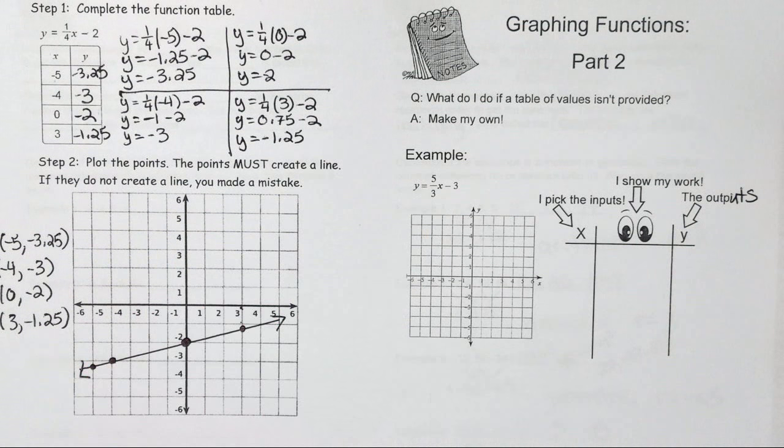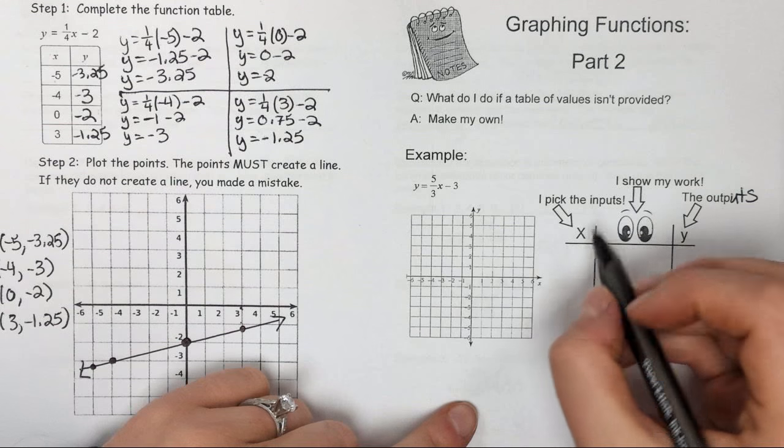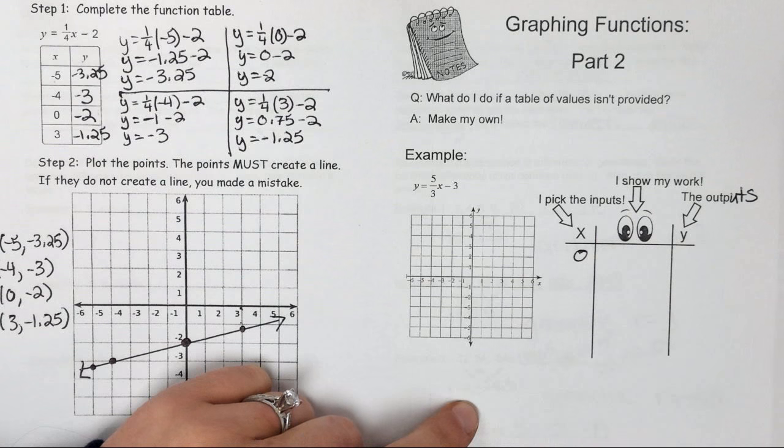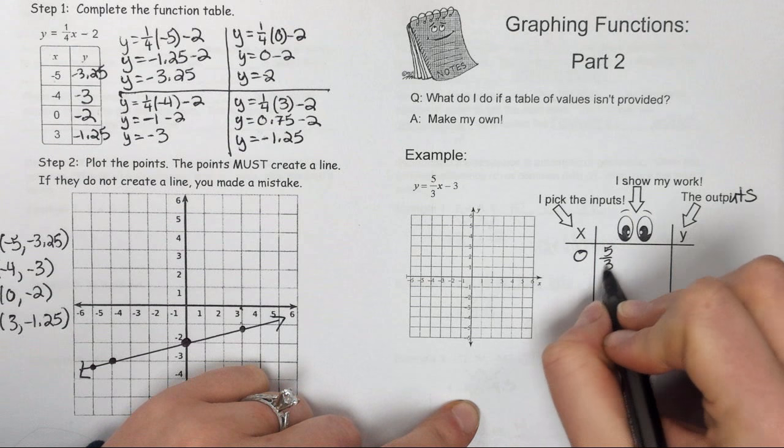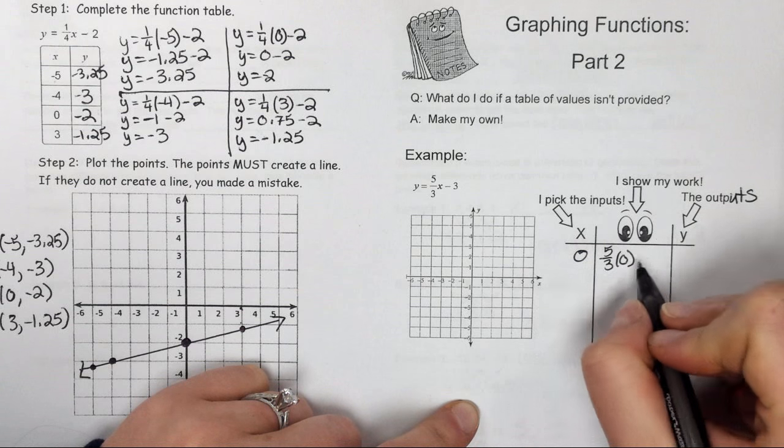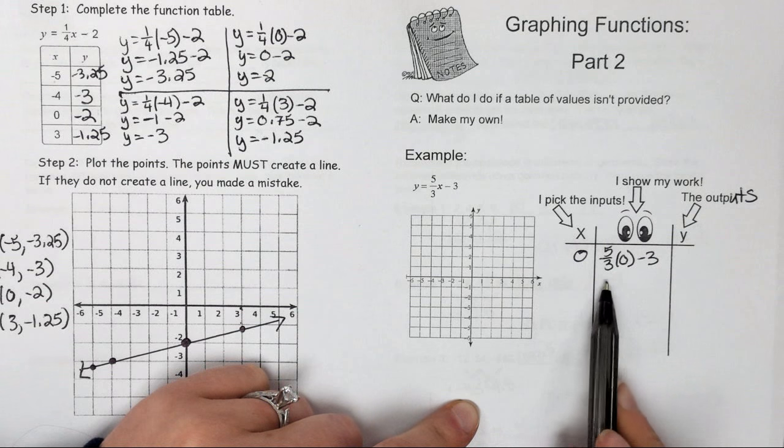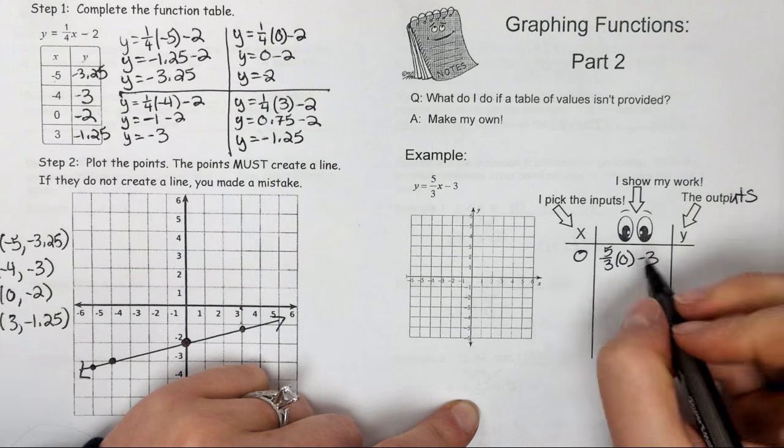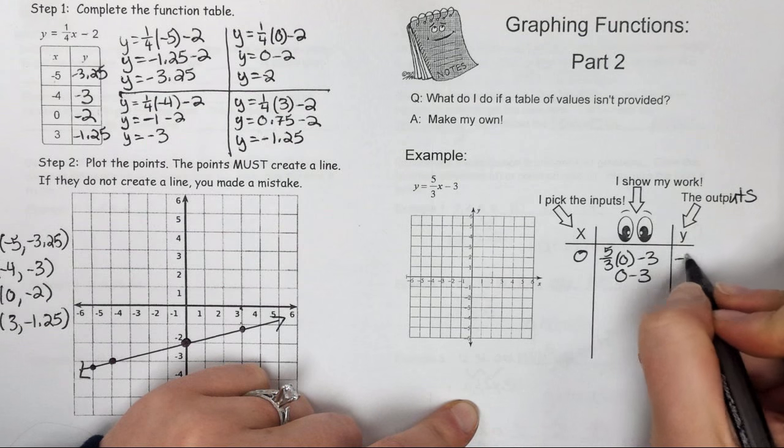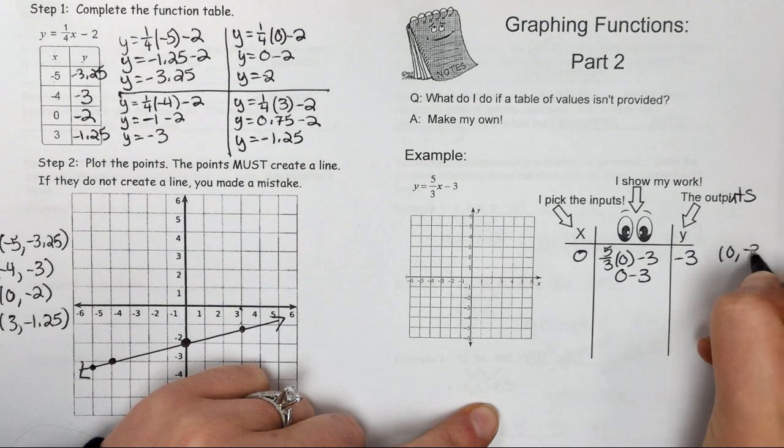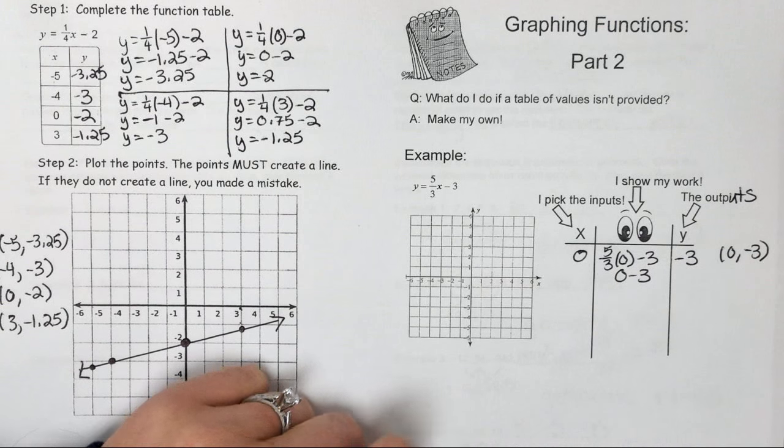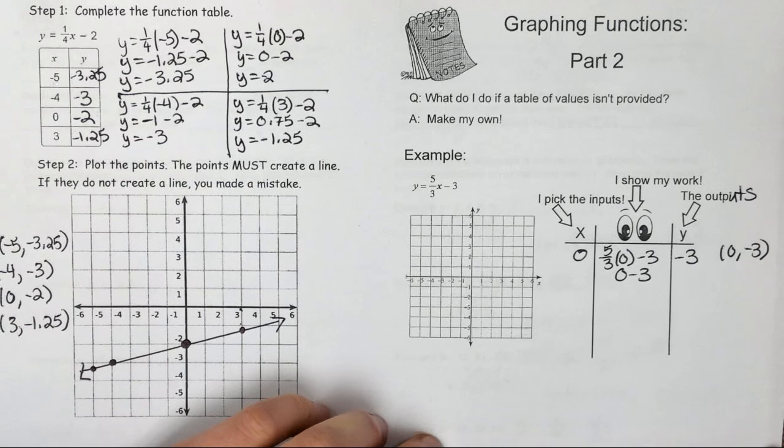We want to be smart when we pick our input. We don't want to pick random numbers. If we do a little bit of thought here, this makes plugging in the values easier. You need to pick at least 3, and the first one that I always pick is 0. Because when I pick 0, my first piece of my equation cancels out. 5/3 times 0 is 0. That makes for a very nice ordered pair of 0, negative 3. Makes my work less difficult.